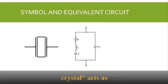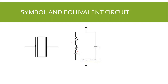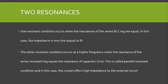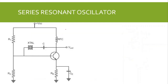The quartz crystal actually acts as a tank circuit and can be used as feedback in oscillators. When the quartz crystal is used as feedback in the series path, it is called a series resonant oscillator. When it is used in the parallel or shunt path, it is called a parallel resonant oscillator. In the series resonant oscillator, the crystal oscillator is used in a series feedback path.